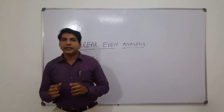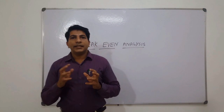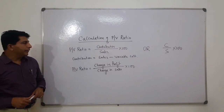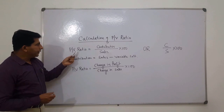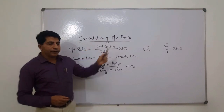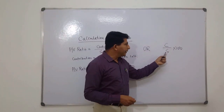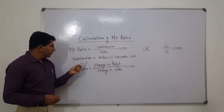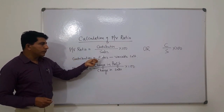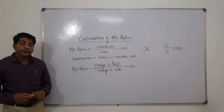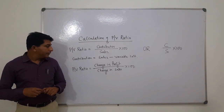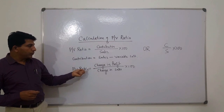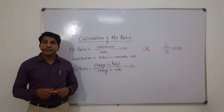Contribution is the difference between sales and marginal cost. PV ratio can be calculated using two formulas. One is: contribution divided by sales, multiplied by 100 — that is, C divided by S into 100. Contribution is equal to sales minus variable cost. When the profits and sales of two years are given, we can use the formula: PV ratio equals change in profit divided by change in sales, multiplied by 100.